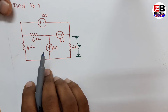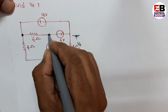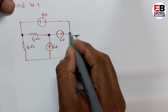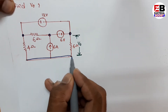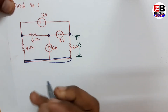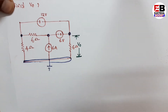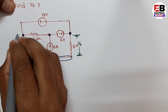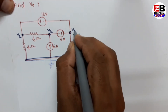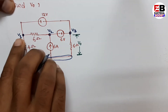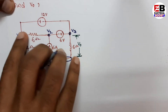First we identify the nodes. The number of nodes here: this is node one, this is node two, and this is node three. The bottom total connection we take as the reference node, or zero potential. Node one is V1, node two is V2, and node three is V3.